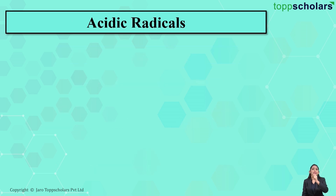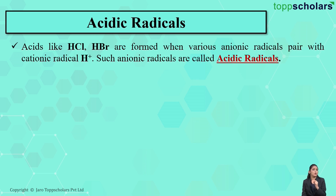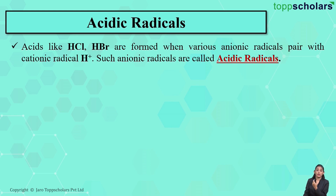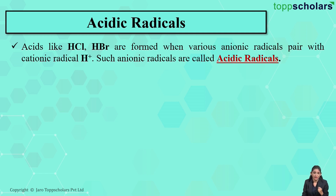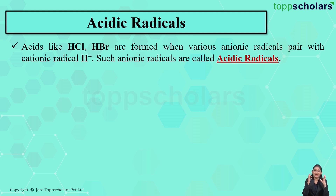What do we mean by acidic radicals? If we talk about acids like hydrochloric acid (HCl) or hydrobromic acid (HBr), these acids are formed when anionic radicals pair with the cationic radical H⁺. These anionic radicals are called acidic radicals. So acidic radicals are simply anionic radicals which pair up with the cationic radical H⁺ to form acids.